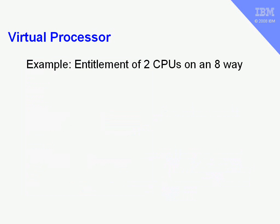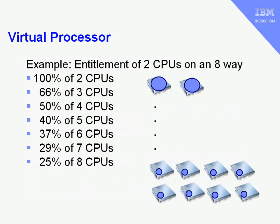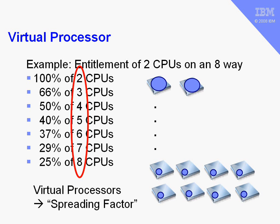Let's have a quick look at virtual processors with an example. A logical partition is entitled to two CPUs worth of time on an eight-CPU machine. There are different ways of implementing that two CPUs worth of compute time: we could put them all onto two CPUs used 100%, or split them across four CPUs getting half of each, or across all eight CPUs getting 25% of each. We have to give a hint to the computer which we'd actually like, and these numbers are the virtual processors — this is how we decide how to implement that two CPUs worth of compute time.